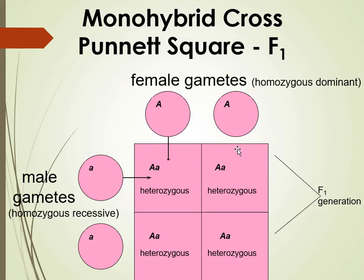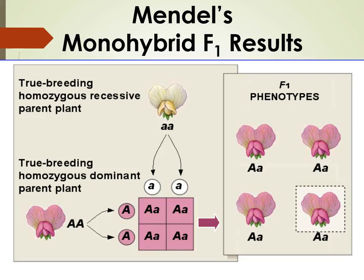That will always be the case with true breeding parents under complete dominance — we'll talk about that later. True breeding parents, one homozygous dominant and one homozygous recessive, will always give you 100% heterozygous offspring in the F1 generation. Any combination of eggs and sperm will always be 100% heterozygous, and if this is complete dominance, then we get 100% dominant trait — so all offspring in the F1 generation will be purple or pink flowers.